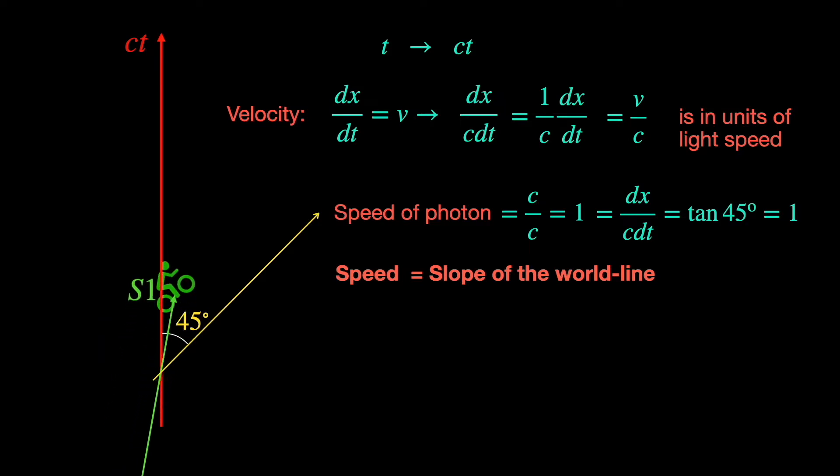Any material object or observer moving uniformly relative to the rest frame S0 must have speeds less than that of a photon. So the angle its world line makes with the vertical time axis of S0 frame is less than 45 degrees, and the corresponding slope representing its speed has to be a fraction.